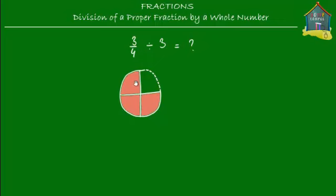So what we have is three quarters of this pizza, and we also have three friends. These three friends share three quarters of this pizza. And what we want to find out is if three friends share three quarters of this pizza, how much pizza does each friend get? So what we want to find out is: what is three quarters divided by three?